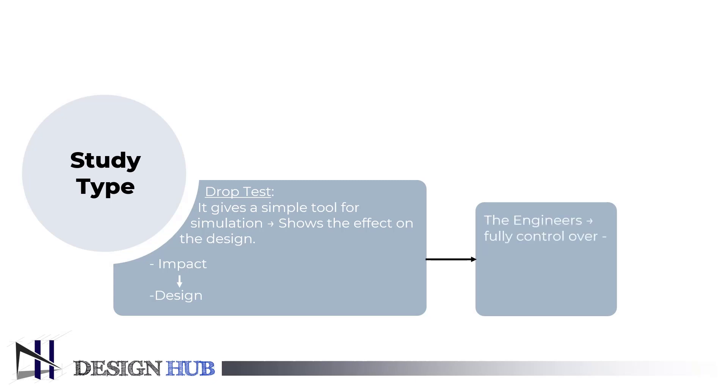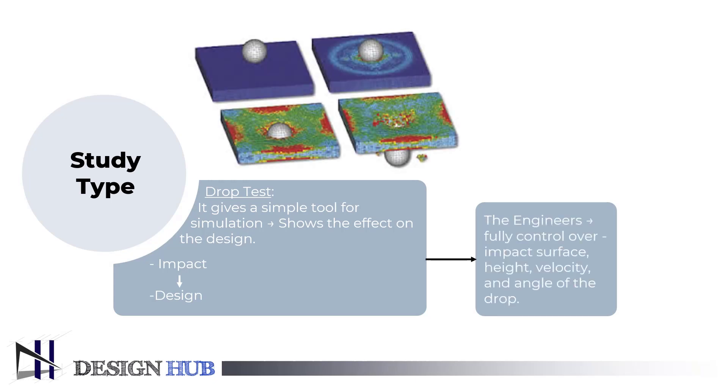The tenth study type is drop test. It offers a simple to use tool for simulating the effects of component and assembly drop tests. A drop test analysis is used to determine how a design will respond to the impact. The engineers will be able to fully control the impact surface, height, velocity, and angle of the drop. Using each of these tools assists in achieving results while protecting the prototype design and saving money.